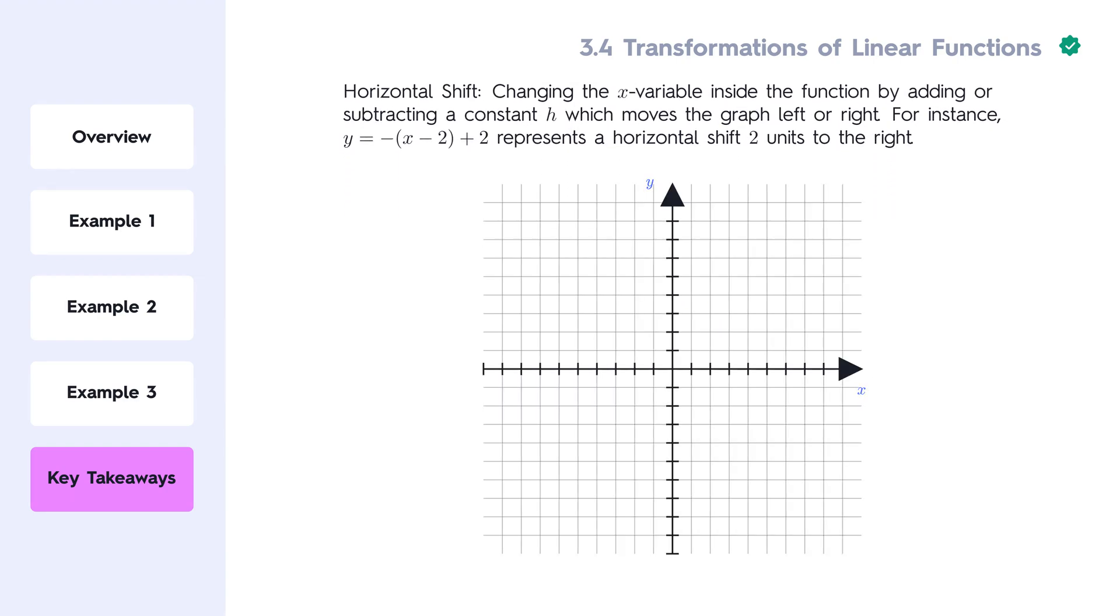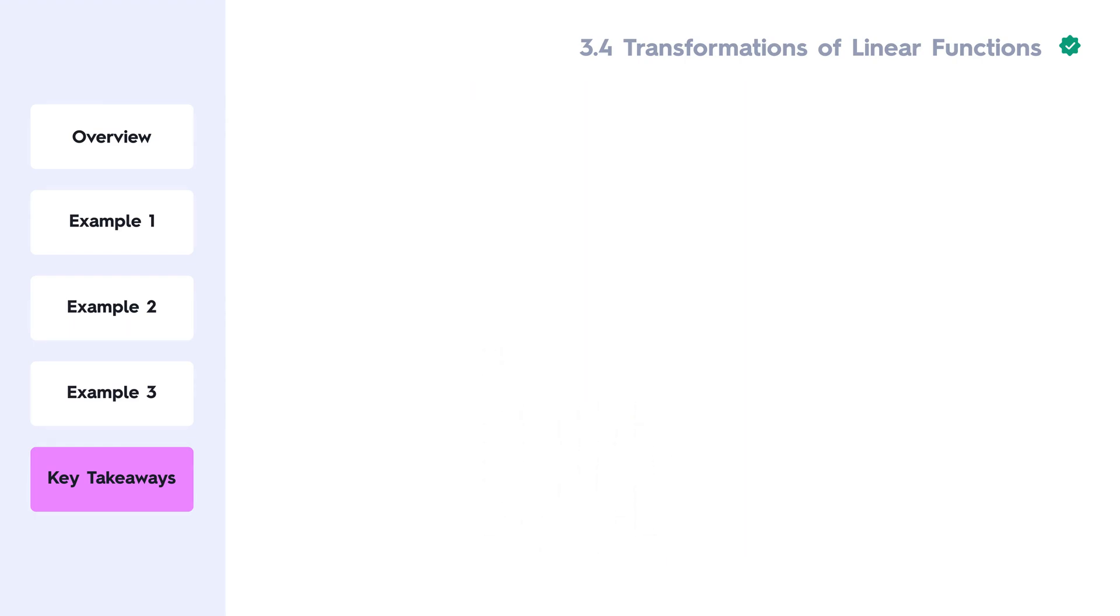Horizontal shift involves changing the x variable inside the function by adding or subtracting a constant h. This moves the graph left or right. For instance, y equals negative x minus 2, plus 2, represents a horizontal shift 2 units to the right.